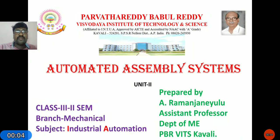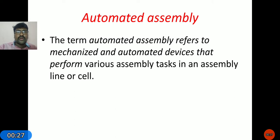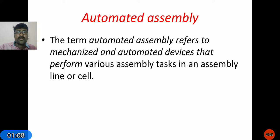Good morning to one and all. In the previous class we discussed what is a flowline, the different configurations, different systems, and part mechanisms. In this lecture I am going to explain about automated assembly systems. Assembly means joining of two or more parts to form a complete assembly or semi-assembly product with the help of mechanized and automated devices. Joining different products with the help of mechanized and automated devices is known as automated assembly.